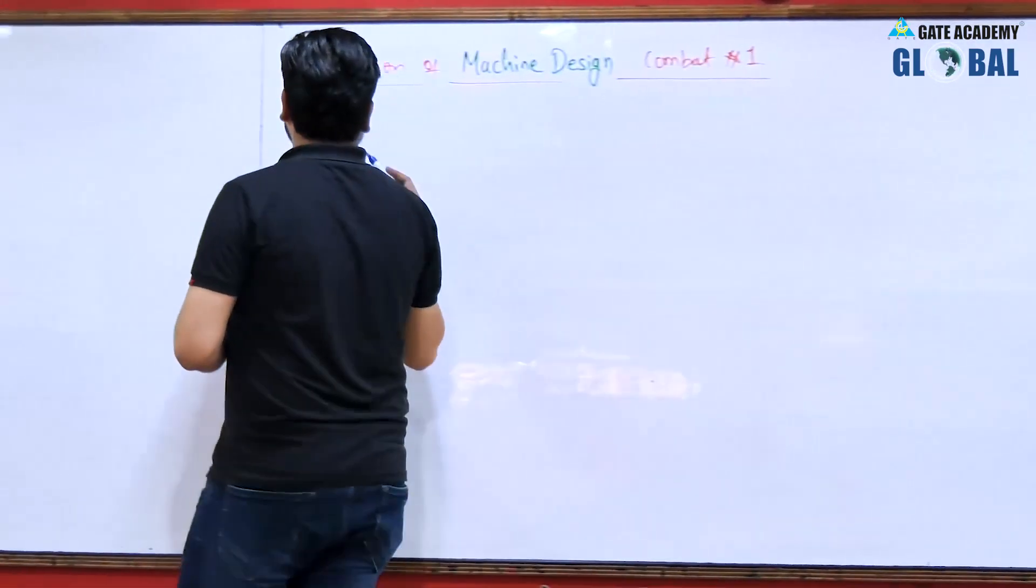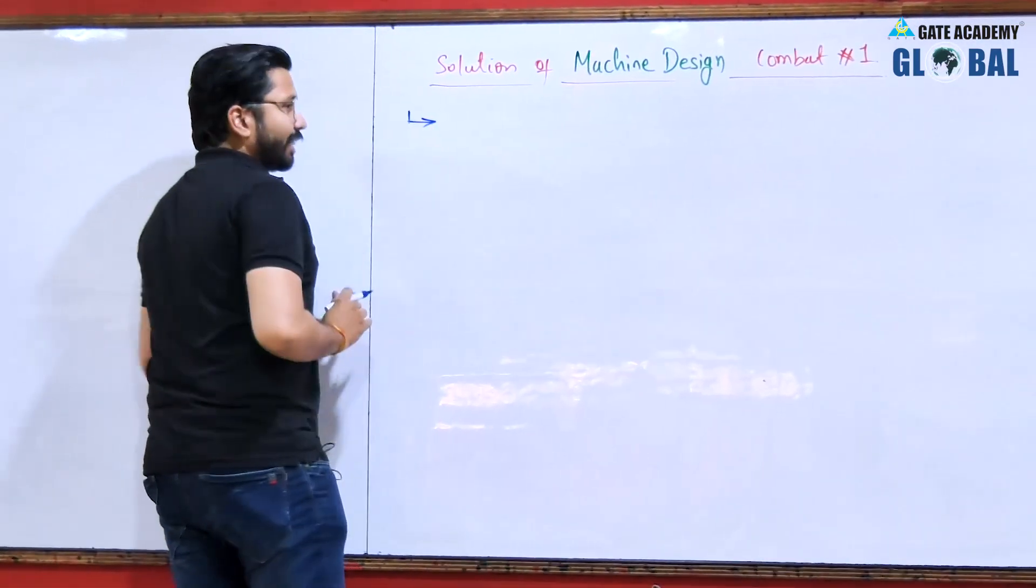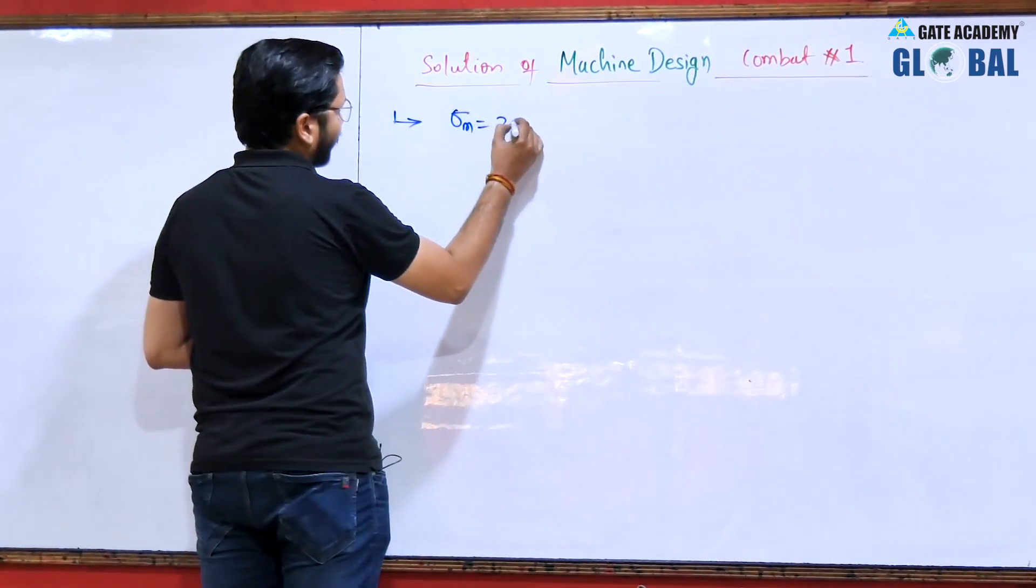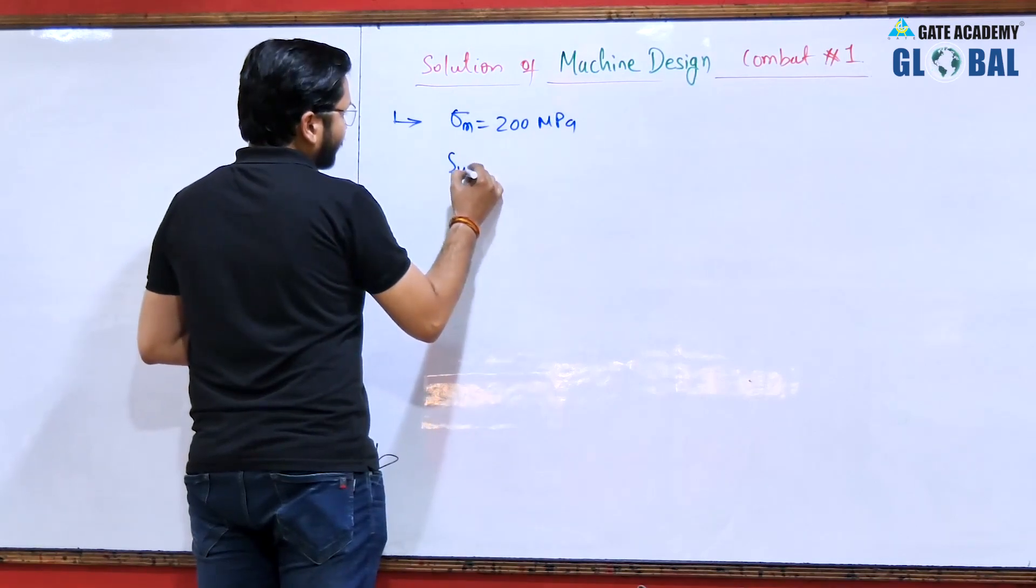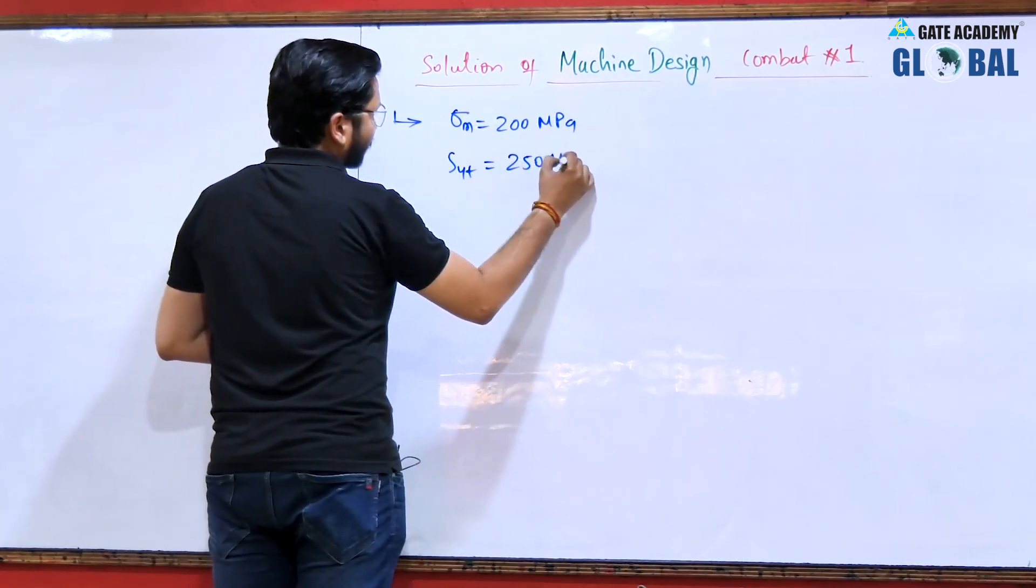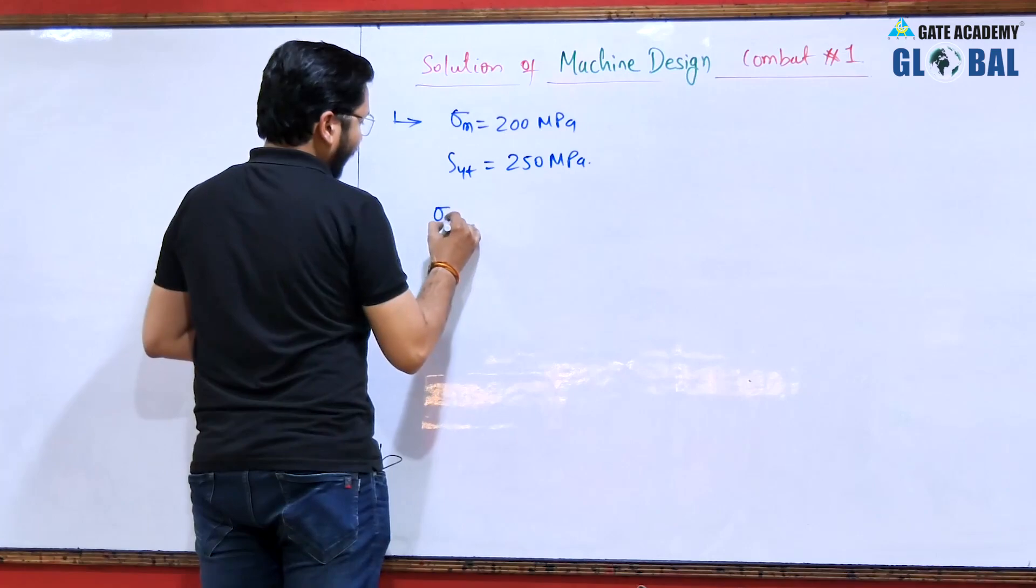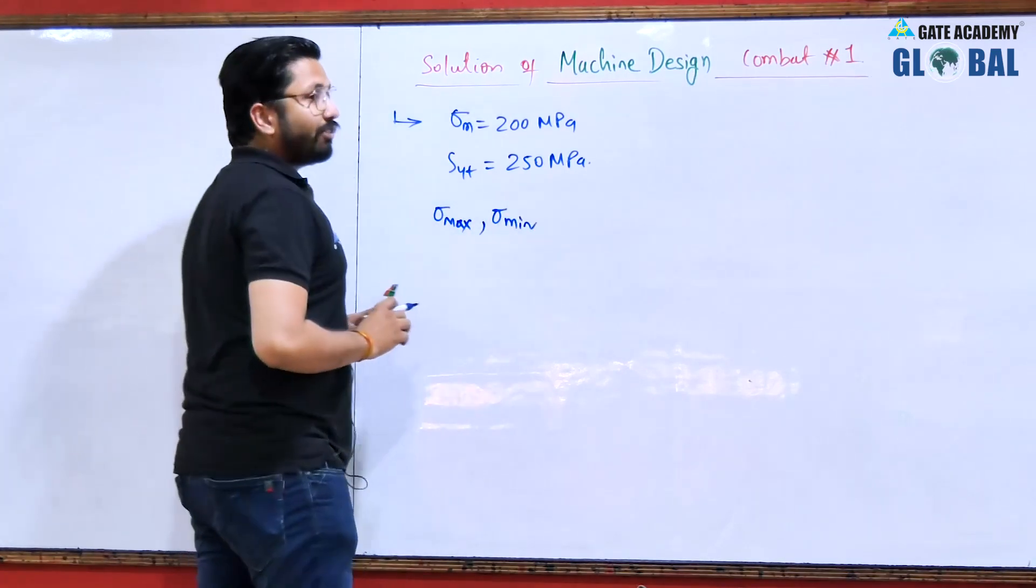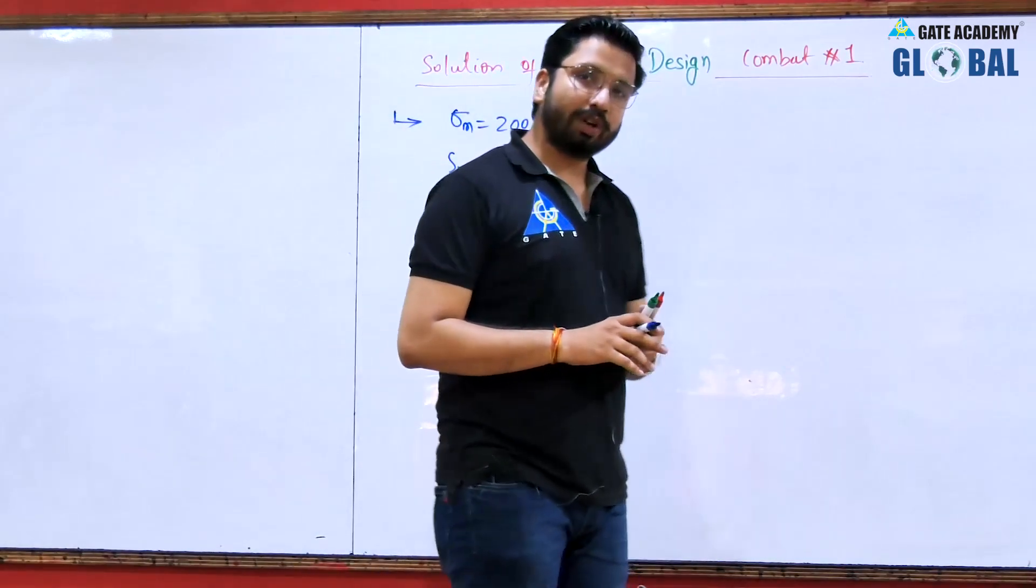In the question it was stated that the component is subjected to a fluctuating bending stress such that the mean stress was 200 mega Pascal, the yield strength of material is 250 mega Pascal, and it was asked what will be the sigma max and sigma minimum such that the component will fail in the very first cycle of the loading.